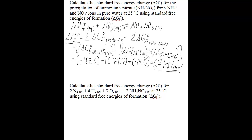Using the same equation as above but substituting in different values, you're going to take 2 times the standard free energy of formation for ammonium nitrate solid. You need to multiply that value by 2 because the stoichiometric coefficient for ammonium nitrate in this reaction is 2.